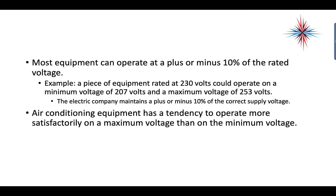Air conditioning equipment has a tendency to operate more satisfactorily on the maximum voltage than on the minimum voltage. In recent years, I have been seeing more and more power supplies hitting close to the 240–245-volt level from the utilities rather than the 230–207-volt range. The utilities are actually starting to provide a higher voltage to buildings to prevent voltage drop when everything is running at one time.